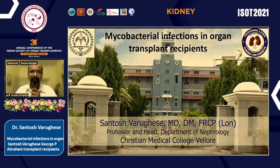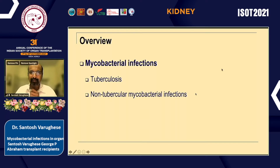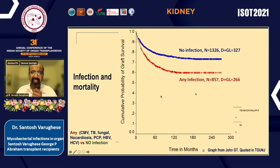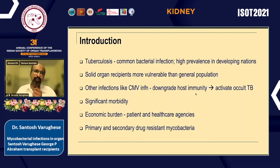As we know, both tubercular and non-tubercular mycobacterial infections are important in transplantation. Looking at tuberculosis first — infections are a problem more than ischemic heart disease, rejections, and graft dysfunction. Infections carry a high risk of mortality in our population compared to the West and are an independent risk factor for mortality. This graph shows that if a patient had any infection — CMV, tuberculosis, fungus, PCP, HCV — versus no infection, there is a definite effect on patient mortality.